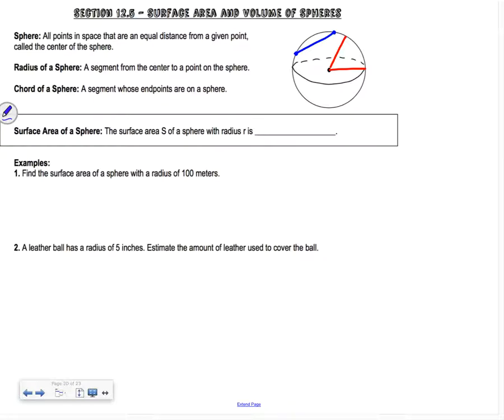The surface area of the sphere is the first formula we're going to learn. The surface area of the sphere S is very similar to our area of a circle, which is πr², but it's actually going to be 4πr².